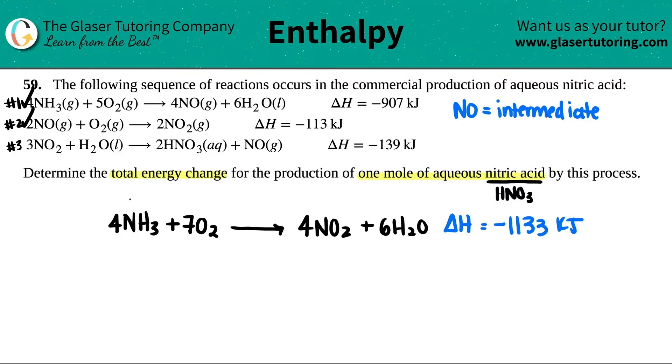Step one is done, step two is done. The only thing I have left now is to go to this formula and introduce step number three. Step number three was three NO2 plus H2O yields two HNO3, so we're finally getting there, plus NO. And that delta H was a negative 139 kilojoules. The same exact idea, we got to get rid of the intermediates.